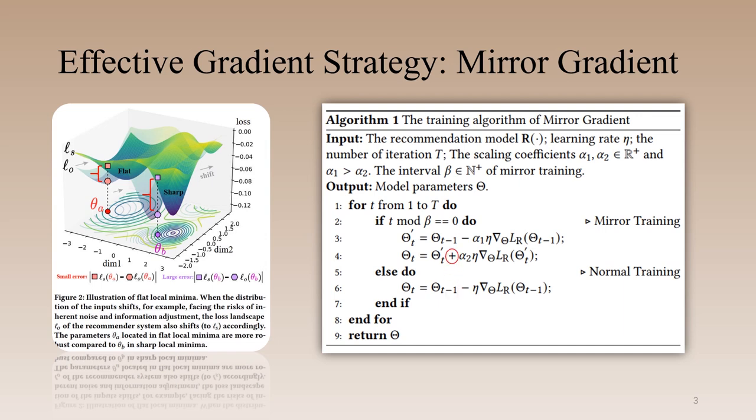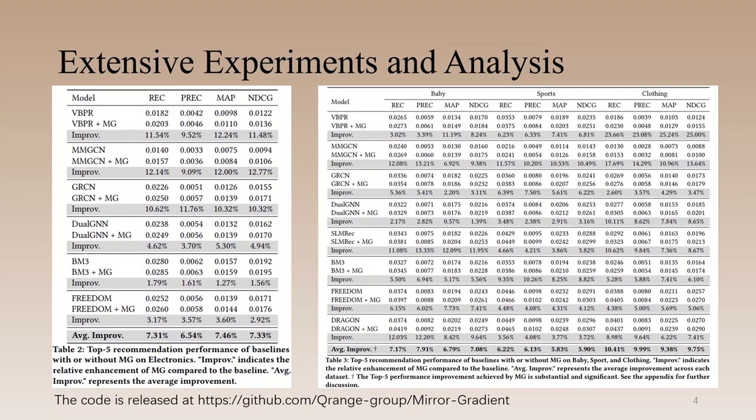To this end, we propose a concise gradient strategy, MG, that inverses the gradient signs appropriately during training to make the multimodal recommendation models approach flat local minima more easily compared to models with normal training. Additionally, we conduct extensive experiments and analysis to validate the effectiveness of MG across various datasets and systems empirically.